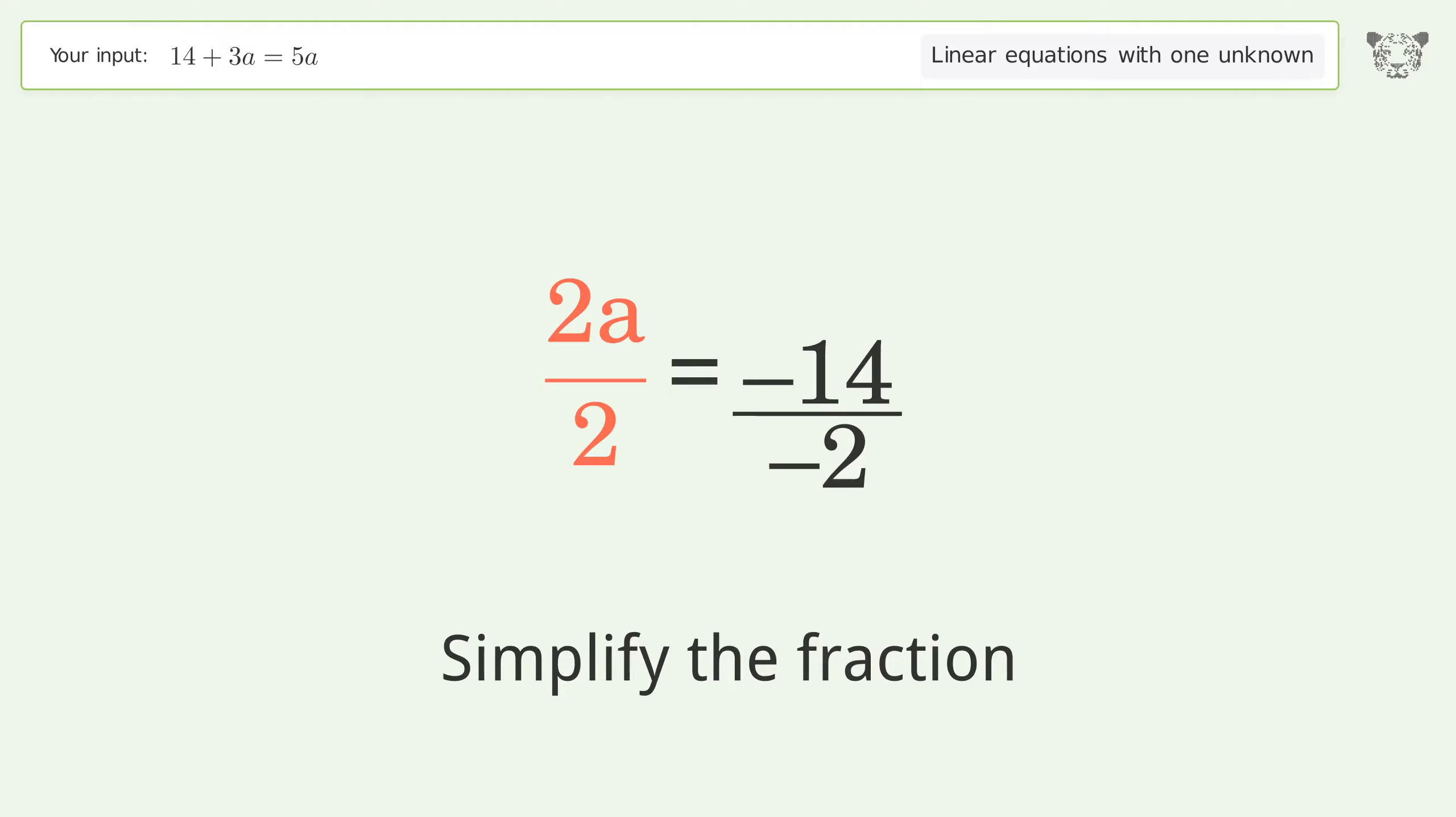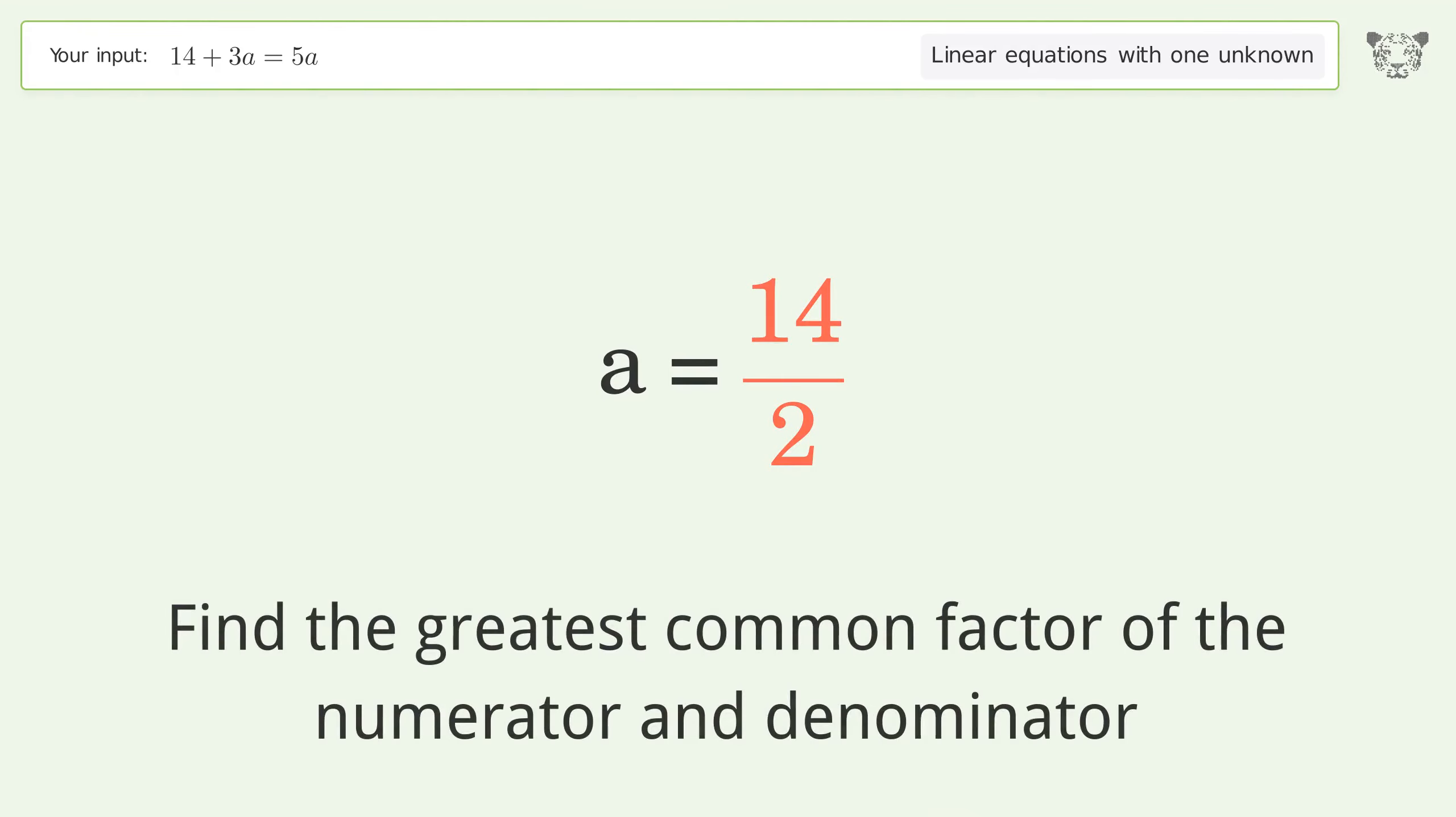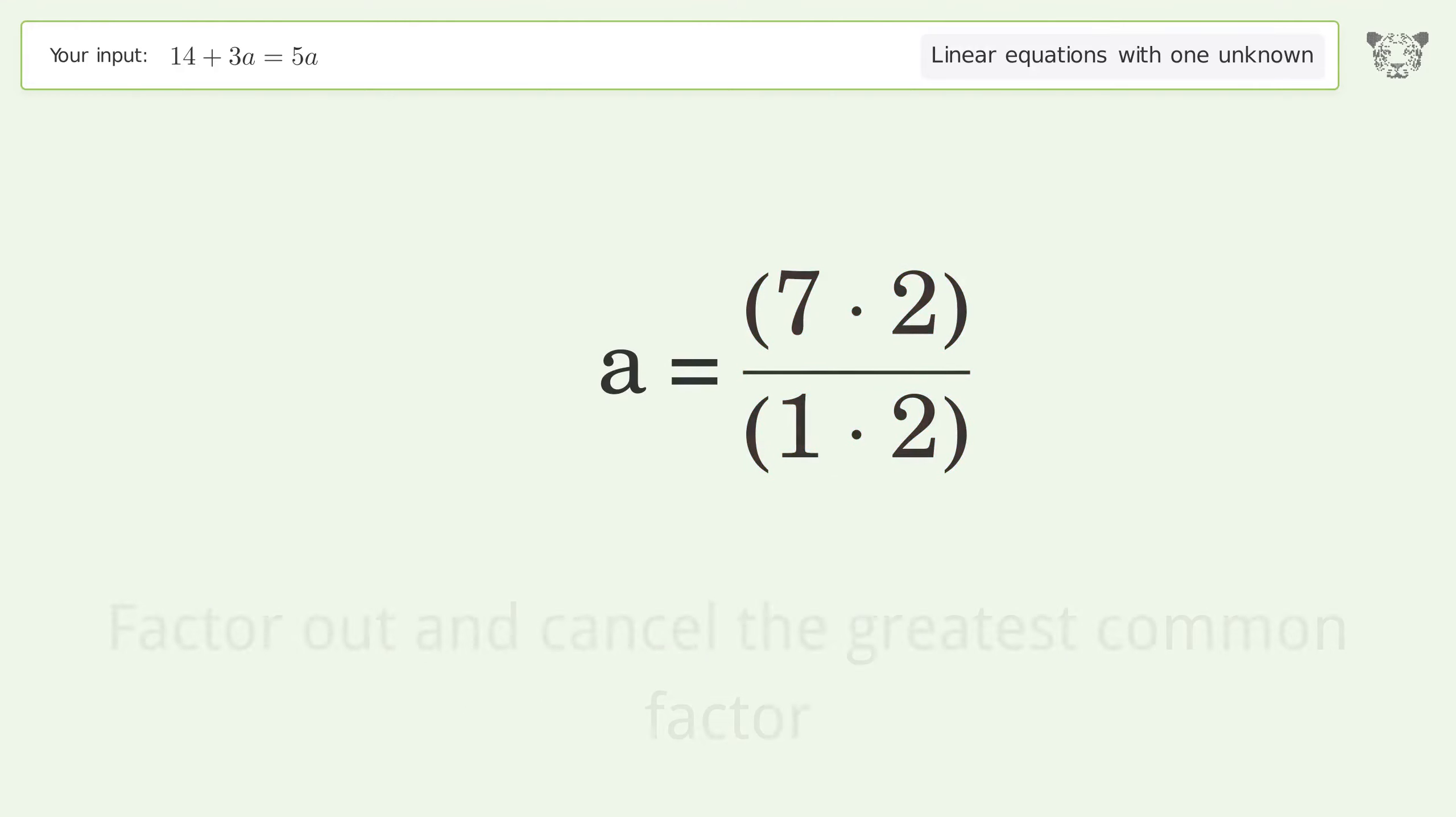Simplify the fraction. Cancel out the negatives. Find the greatest common factor of the numerator and denominator. Factor out and cancel the greatest common factor.